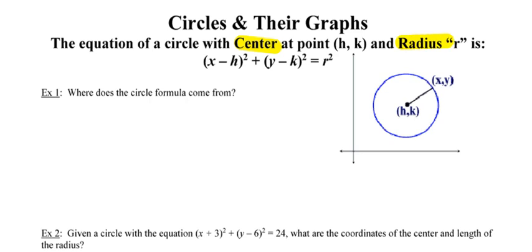Once you know the coordinates of the center and the length of the radius, you can simply substitute them into the formula: (x minus the x-coordinate of the center) squared, plus (y minus the y-coordinate of the center) squared, is equal to r squared.